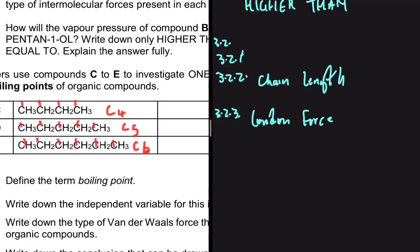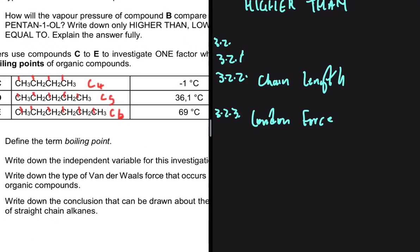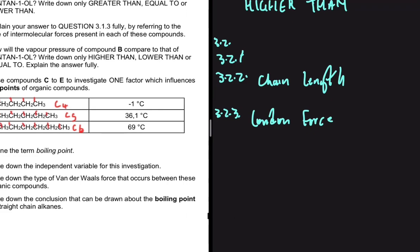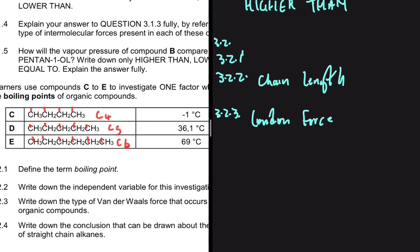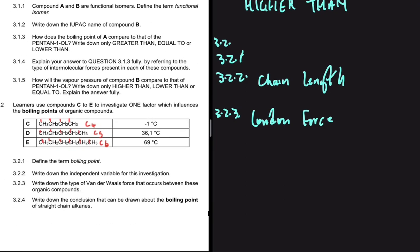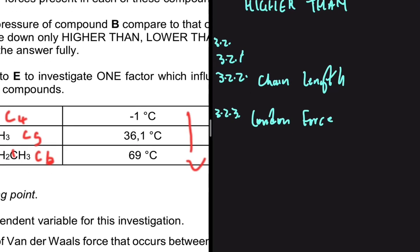For 3.2.4, looking at the diagram, as the number of carbons increases the boiling point increases — from minus one, to 36.1, to 69 degrees. The conclusion is: as chain length increases, the boiling point of straight-chain alkanes increases. If you used molecular mass in 3.2.2, you would state: as molecular mass increases, the boiling point increases.